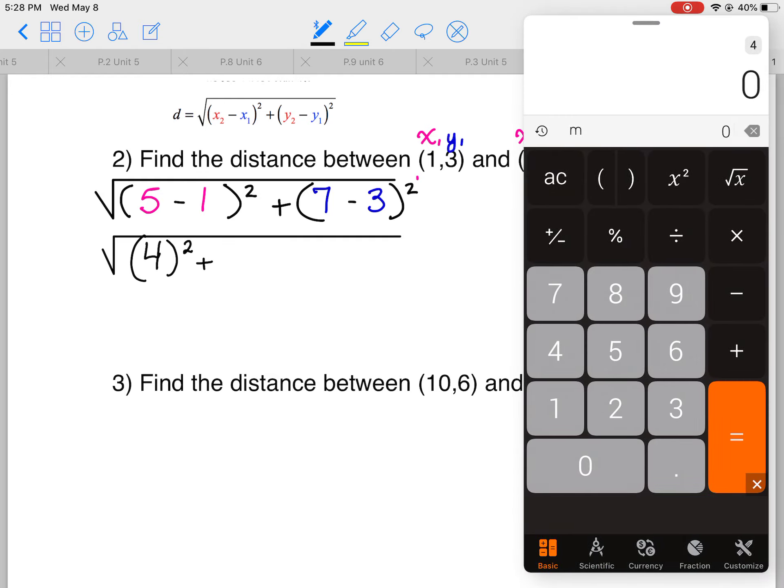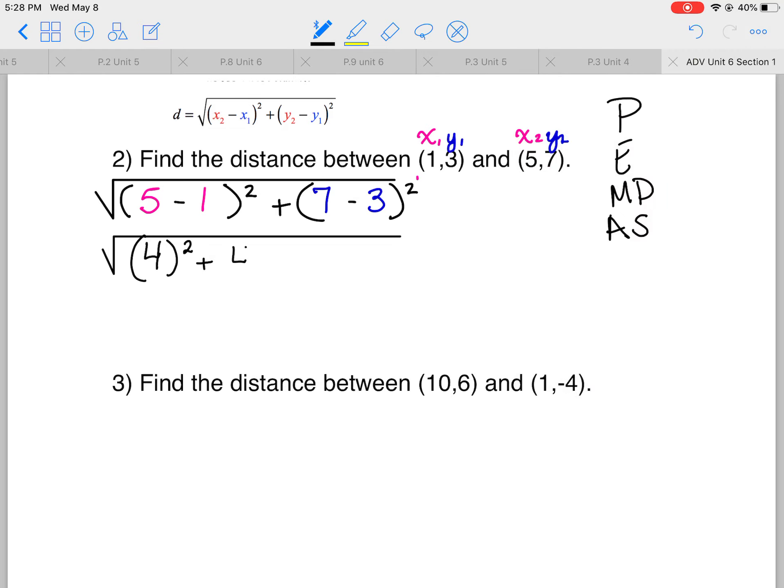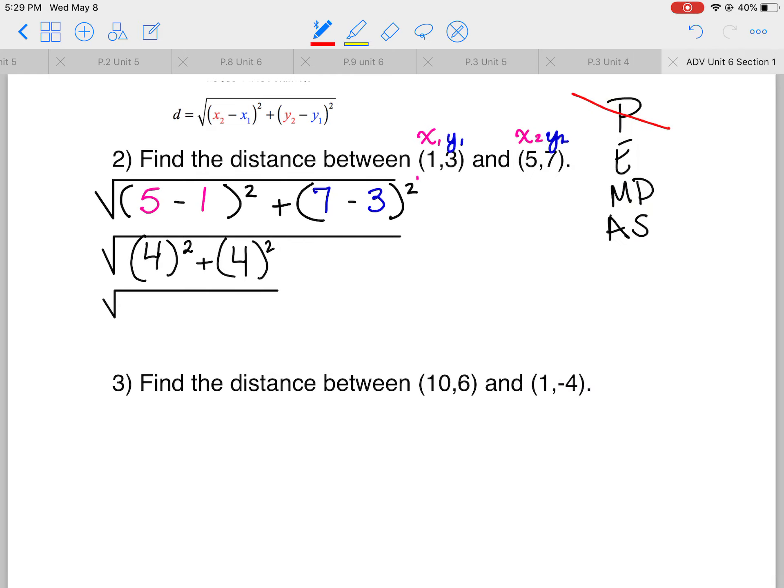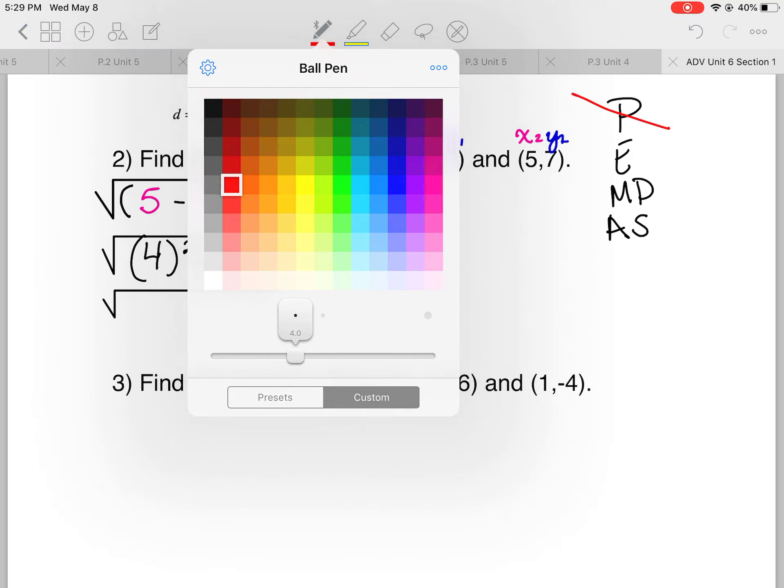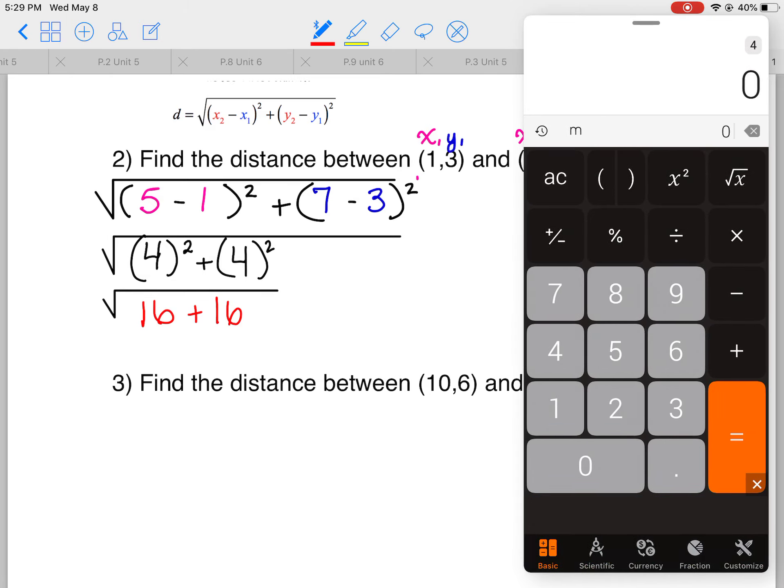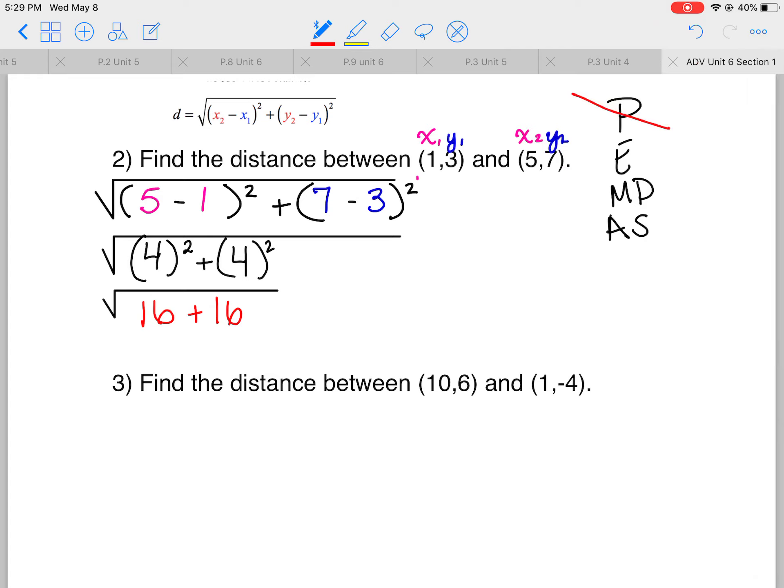Now, 7 minus 3 is 4 as well. Notice I'm keeping them in parentheses just so I can make sure I'm keeping everything together and organized. Now, I'm going to move on to my next step, which is my exponents. Actually, let's go over here, cross out my parentheses. It's done. Now, I'm on to exponents. So, 4 squared is 16. Lucky for us, they are the same number. So, 16 plus 16. Now, always double check. 16 plus 16 is 32.